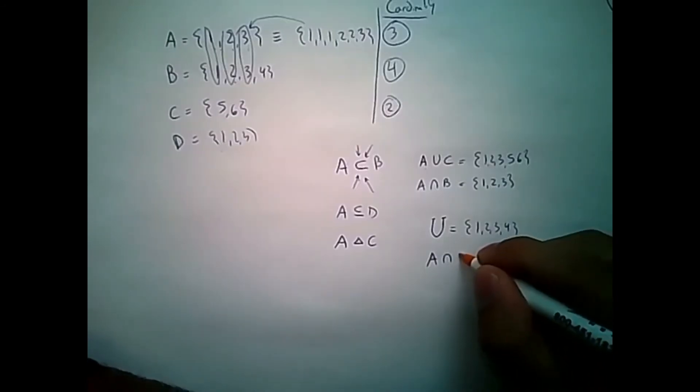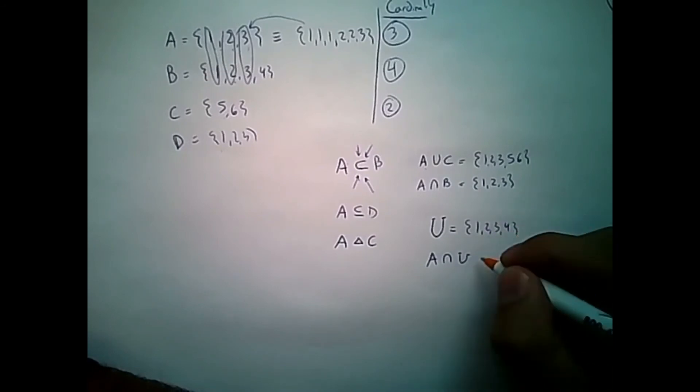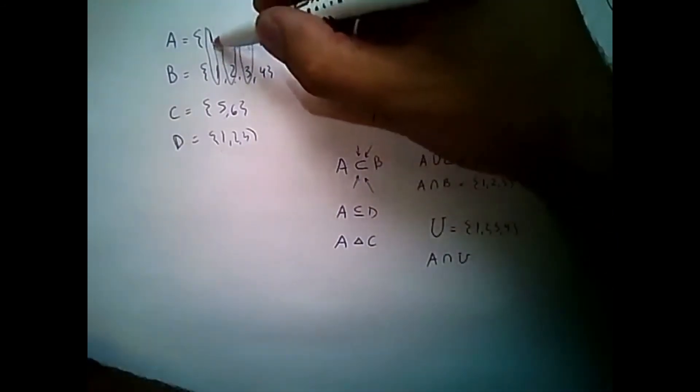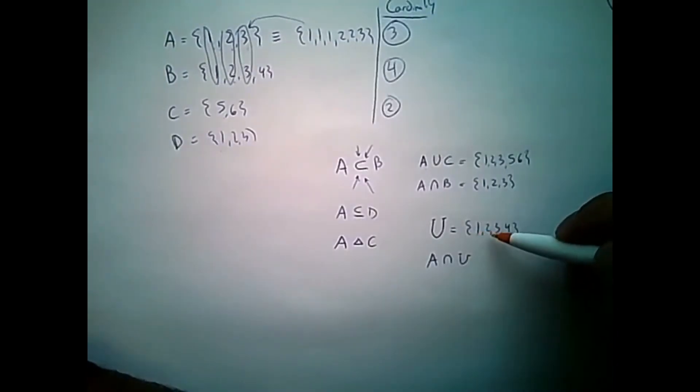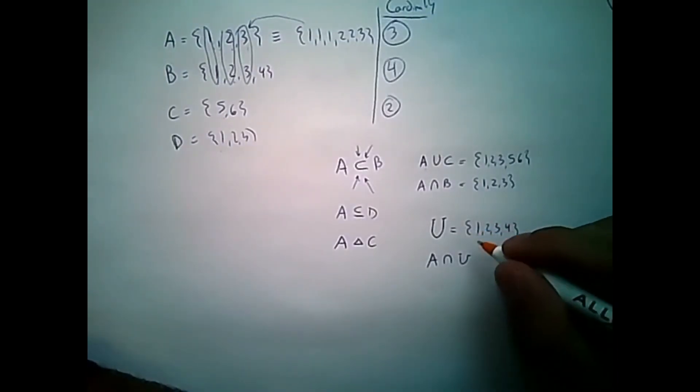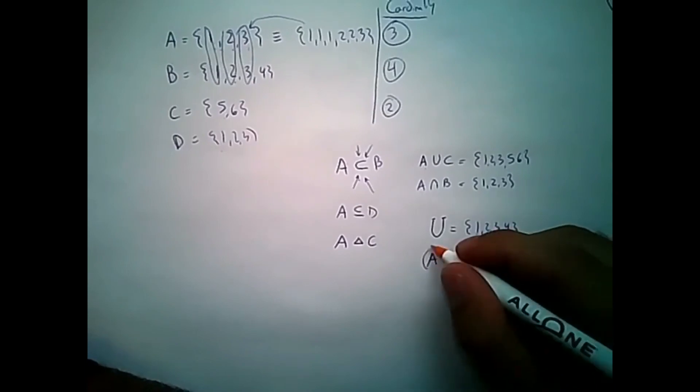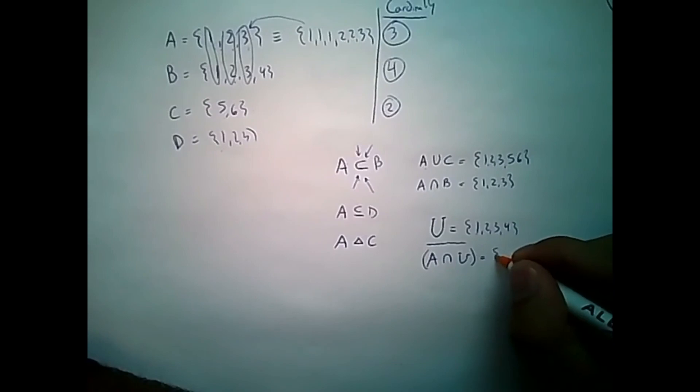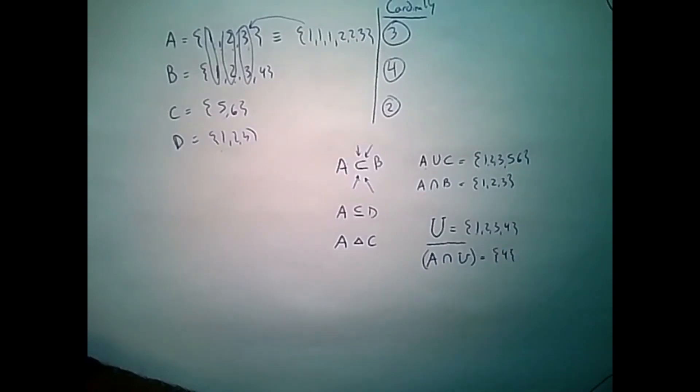And I want to take A and intersect it with the universe, 1, 2, 3, 4. This would give me 1, 2, and 3. That's what's common in both of these sets. But if I wanted to further complement them with the bar, I would say that this is then just 4.